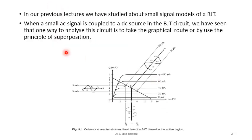In our previous lectures, we have studied about the small signal models of a BJT. When an AC signal is coupled to a DC source and a BJT circuit, there are two ways of analyzing this circuit. One is the graphical method and the other is to use the principle of superposition. In the graphical method, if this is the collector characteristics of your BJT, the AC signal is superimposed over this, and the variations of potential and current due to the addition of these AC components are studied.